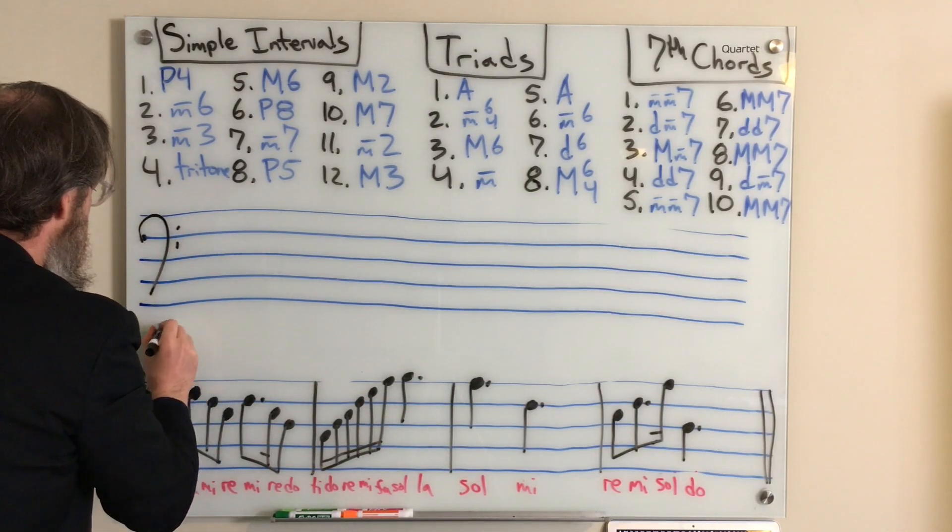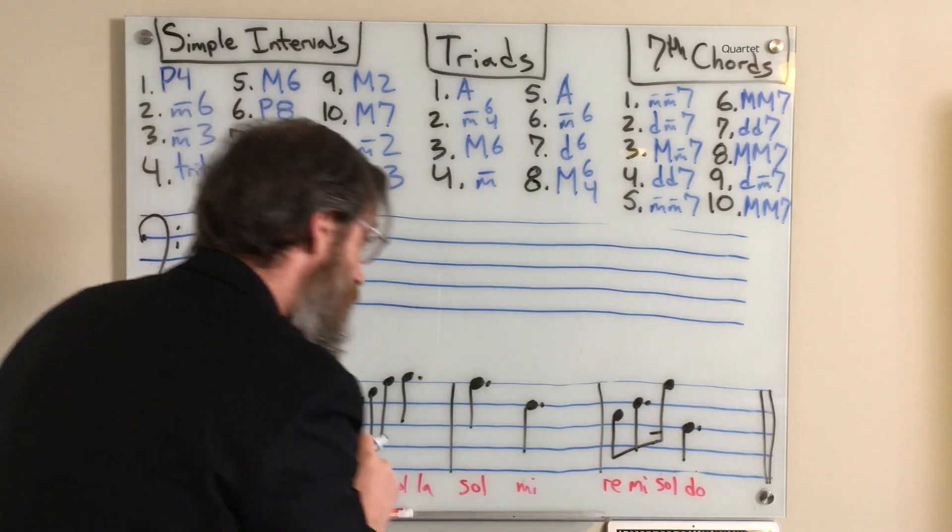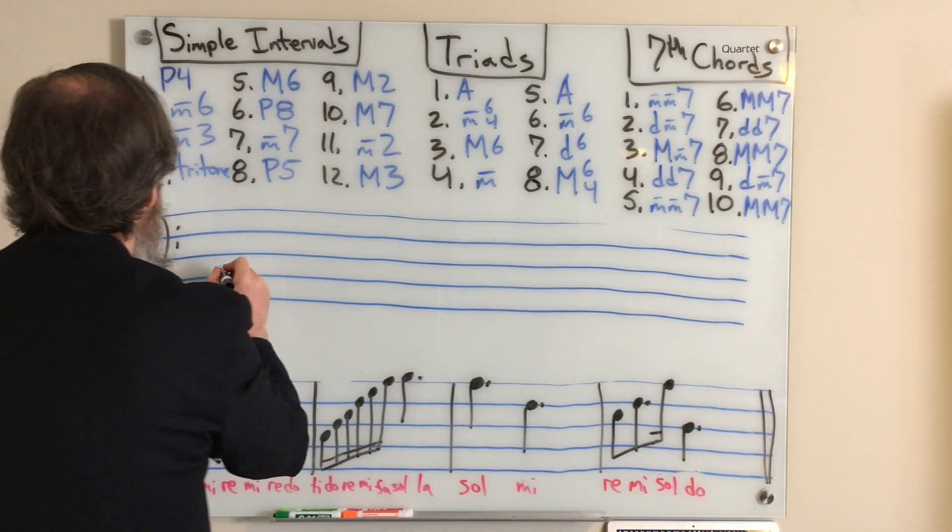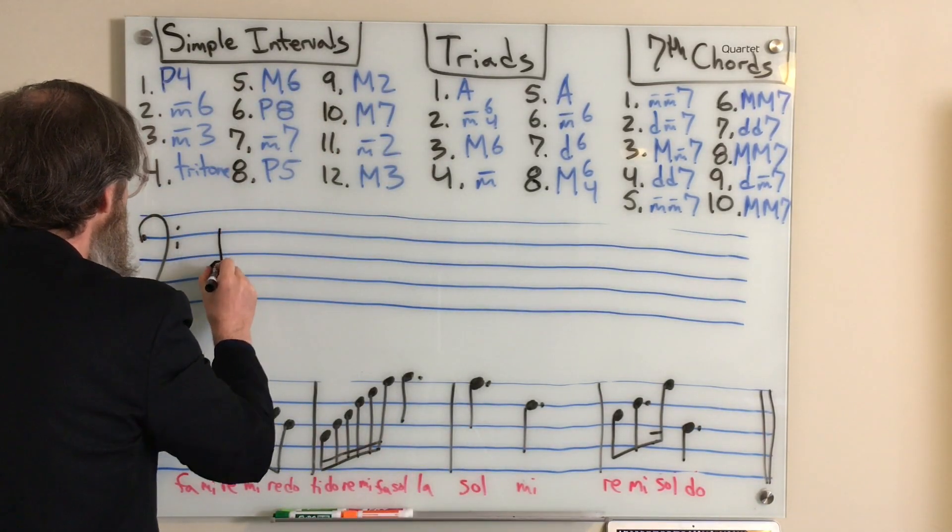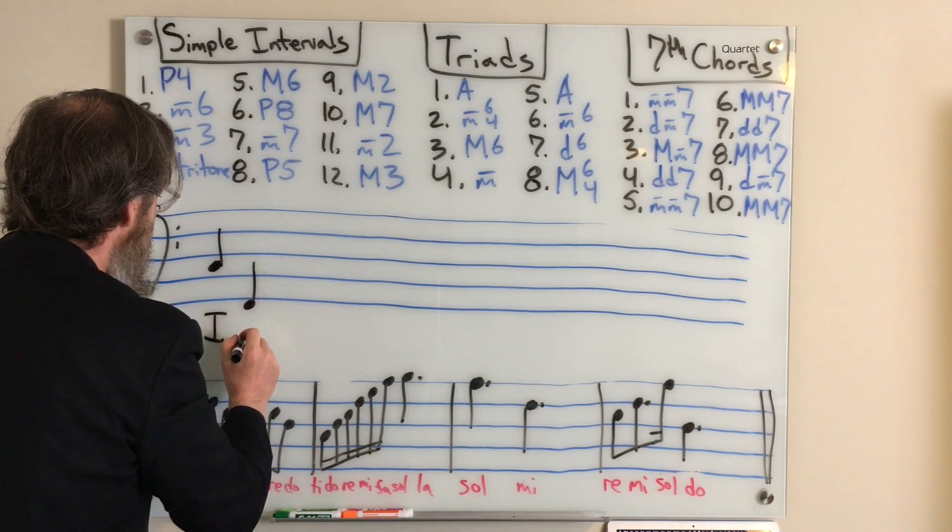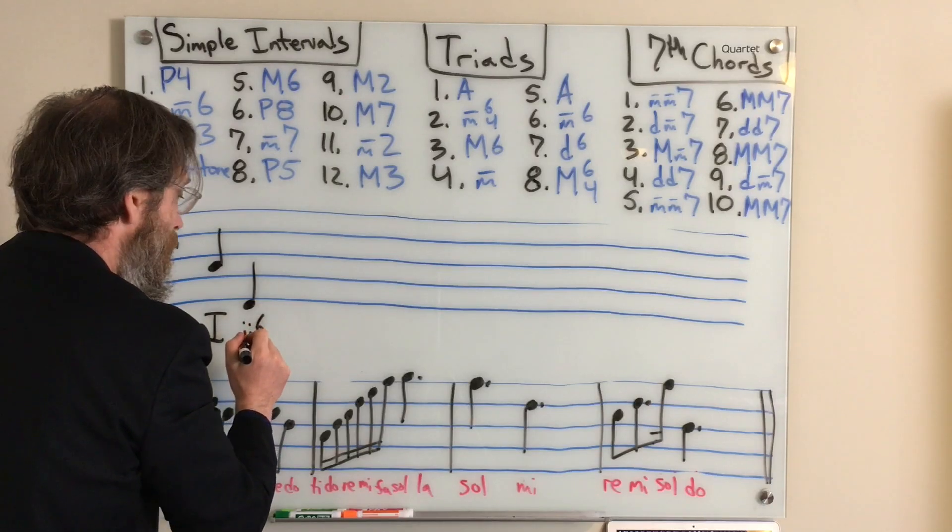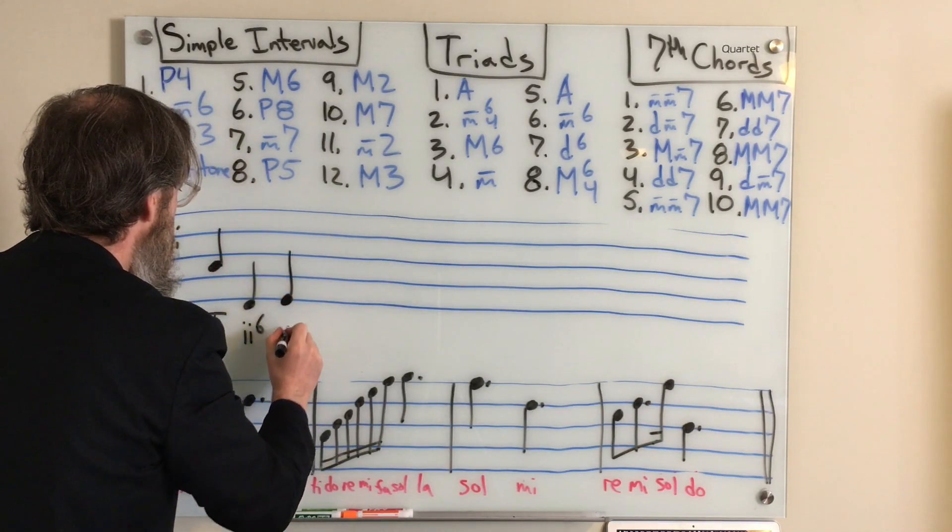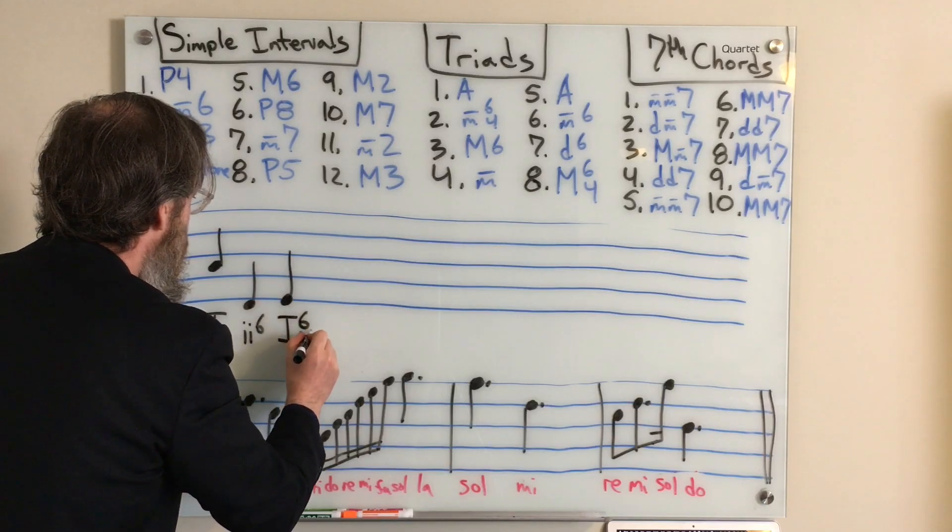So for harmonic dictation, we're writing out the bass line. This first one is in C major. The very first pitch was a C, so it was a root position one chord. It then jumped down to an F, which was a 2-6 chord. It stepped up to a G, which was a 1-6-4.